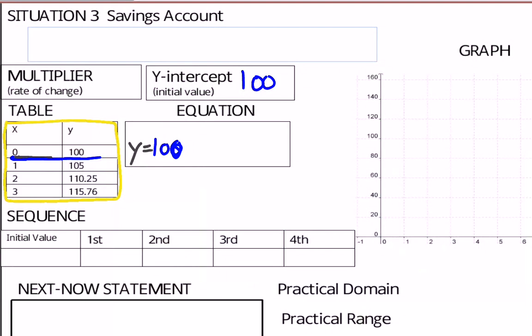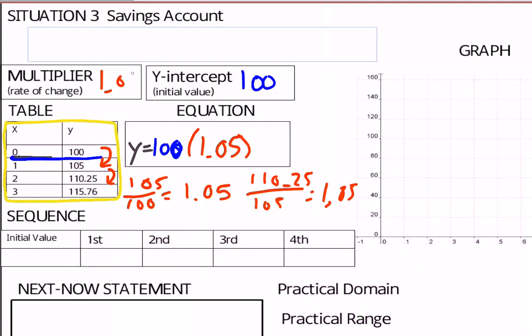Let's talk about how to do this. If I want to say what do I multiply these two numbers to get from the first to the next, what I need to do is divide. 105 divided by 100, I get 1.05. And if I do 110.25 divided by 105, I also get 1.05. So that means that my base is 1.05. What I'm multiplying each time is 1.05.